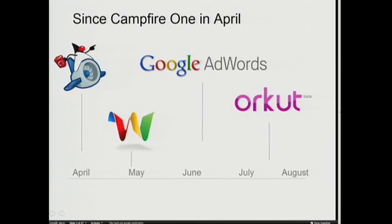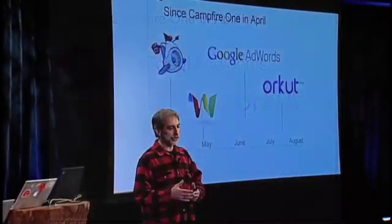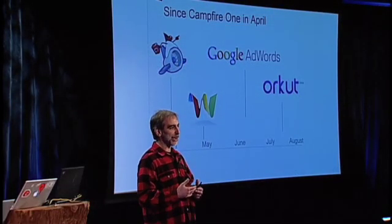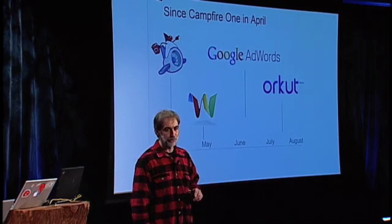Most of you probably know we did a major new release — a ground-up rewrite of our AdWords interface, which is the place that advertisers interact and manage their advertising campaigns, and that was done on top of Google Web Toolkit. We also did a brand new redo of the Orkut UI, which sees incredibly high user traffic, with a much richer, more interactive UI. You probably don't know about a couple dozen other applications that Google has built using Google Web Toolkit, because they're internal.